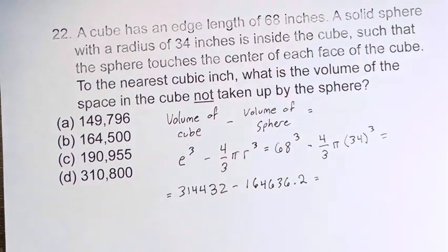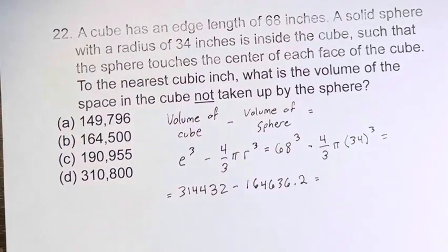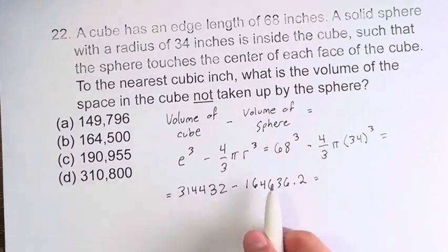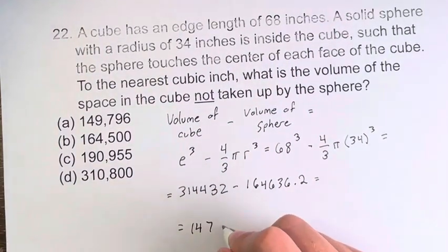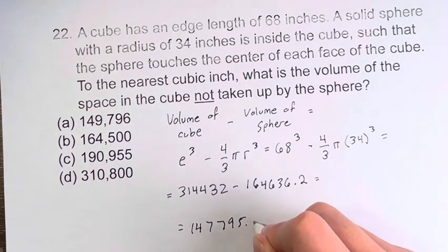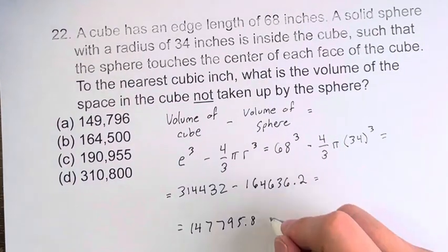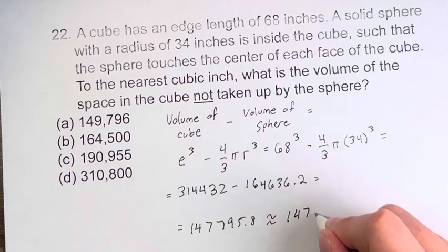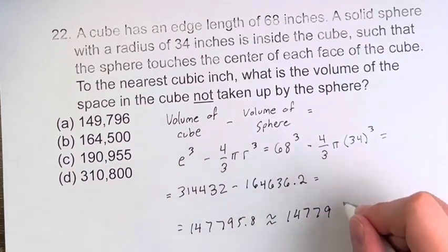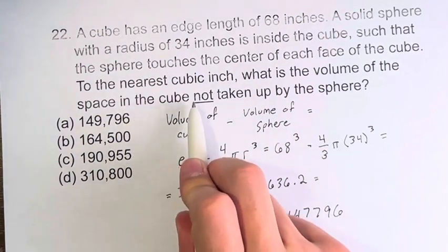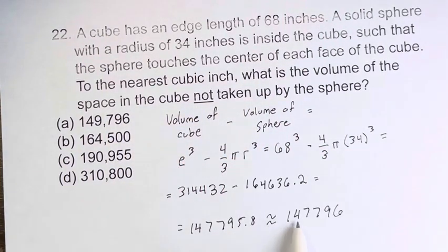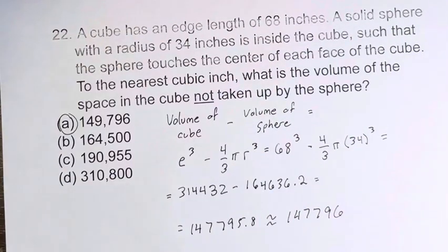It doesn't have to be exact because we're rounding to the nearest cubic inch, so you just have to go one decimal past that for rounding purposes. When you subtract these, you get 147,795.8. When you round it, that rounds up to 147,796. Therefore, the volume of the space in the cube not taken up by the sphere is 147,796 cubic inches.